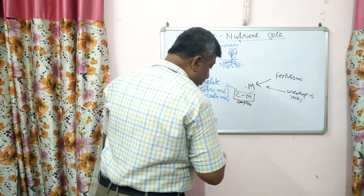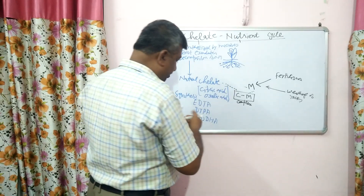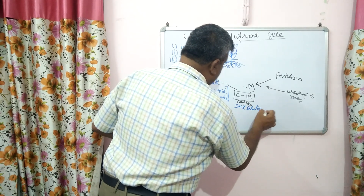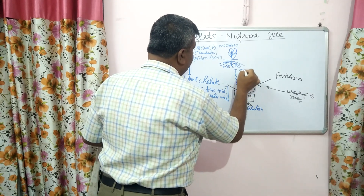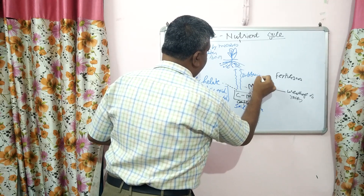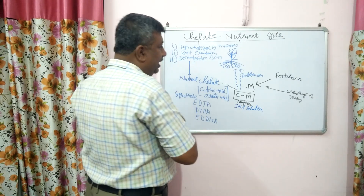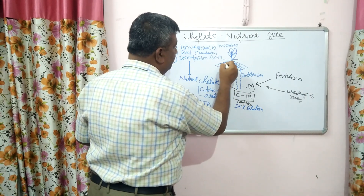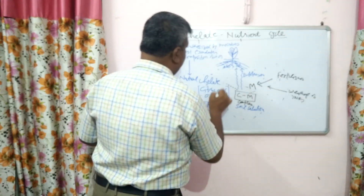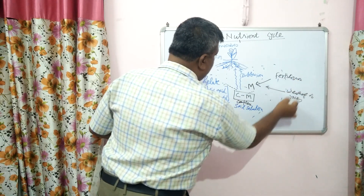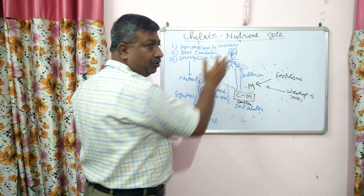This complex moves towards the root because the concentration in the soil solution is higher while concentration near the root is very low. Due to this concentration difference, the complex moves towards the root by diffusion. Chelates are present throughout the soil solution because they are synthesized by roots, microbes, and organic decomposition. As the nutrient is released, the chelate makes a complex and moves towards the root due to the concentration gradient.